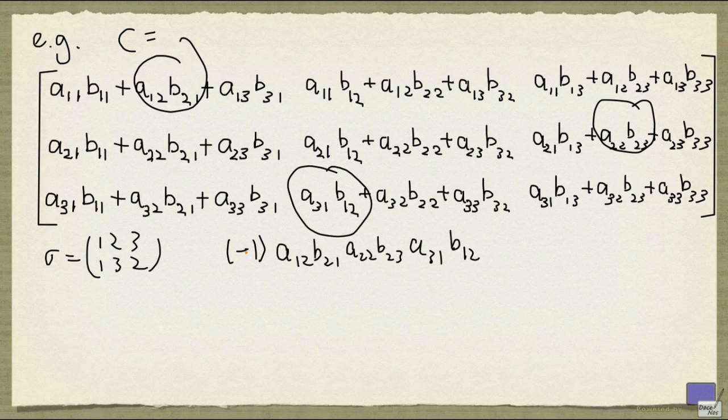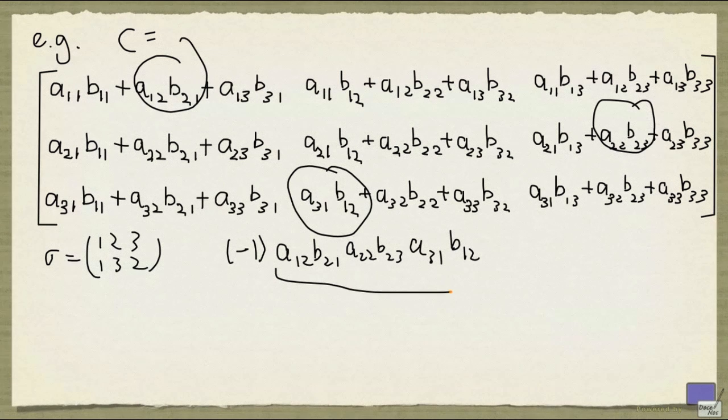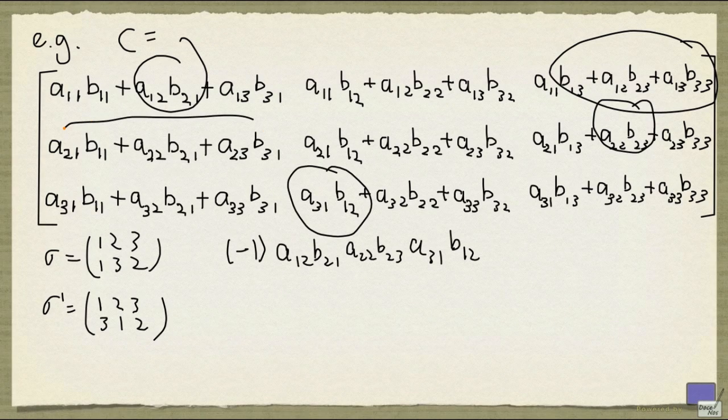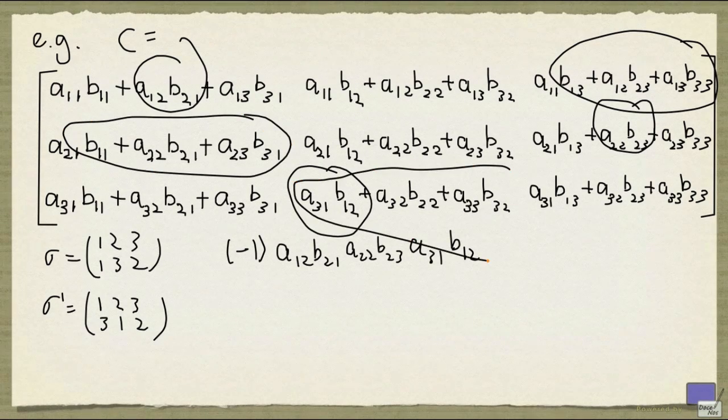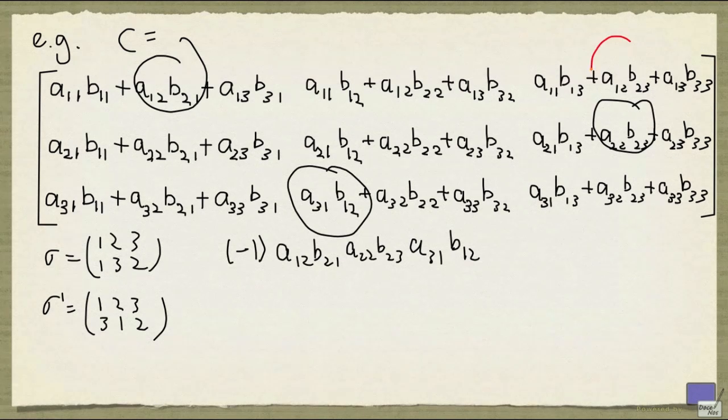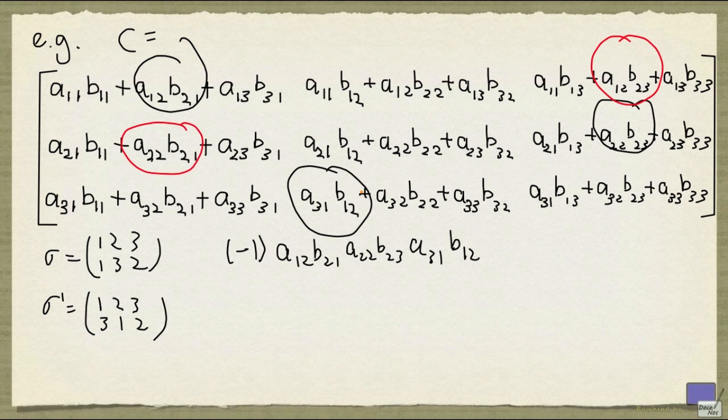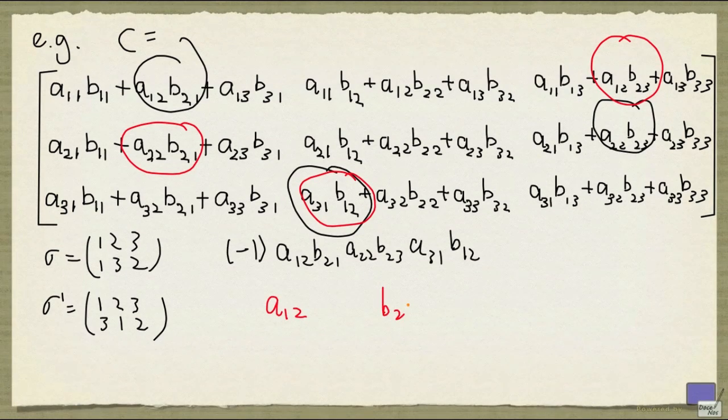Now if we ignore this minus sign, there's actually another way to get this product, and it comes from the term that corresponds to the permutation given by this. So I'm looking at the term given by this times this times this, and the term is going to be given by this times this times this.